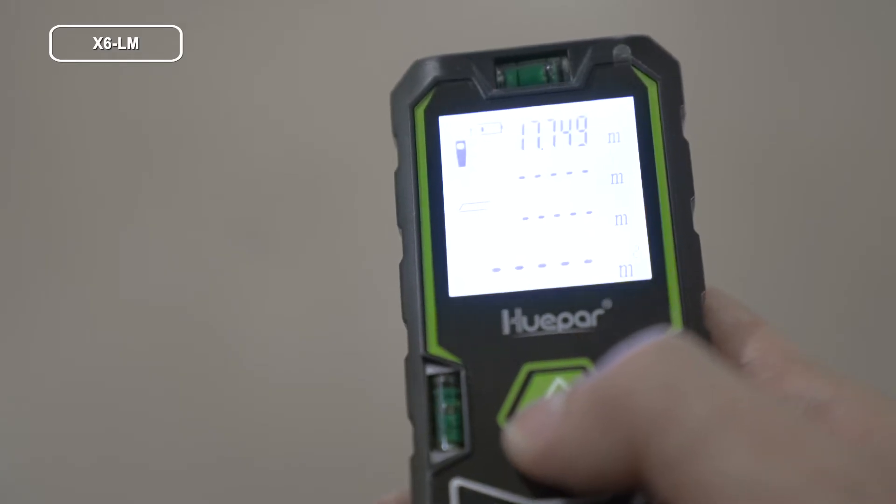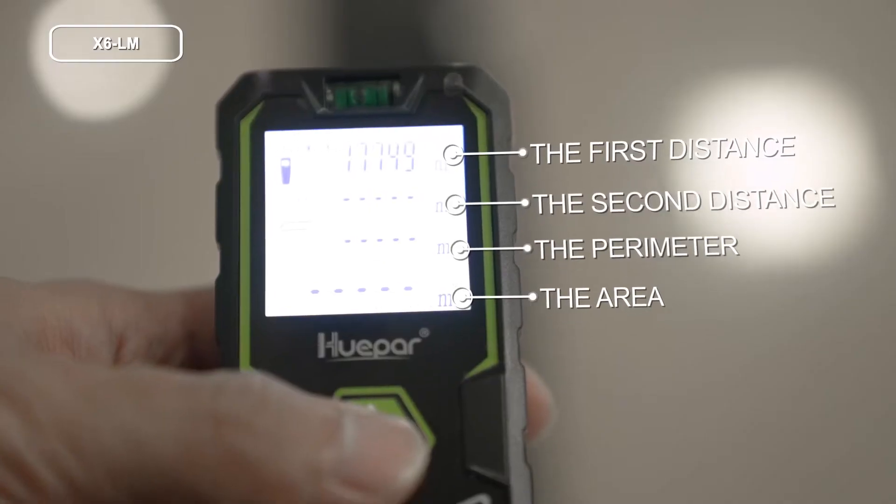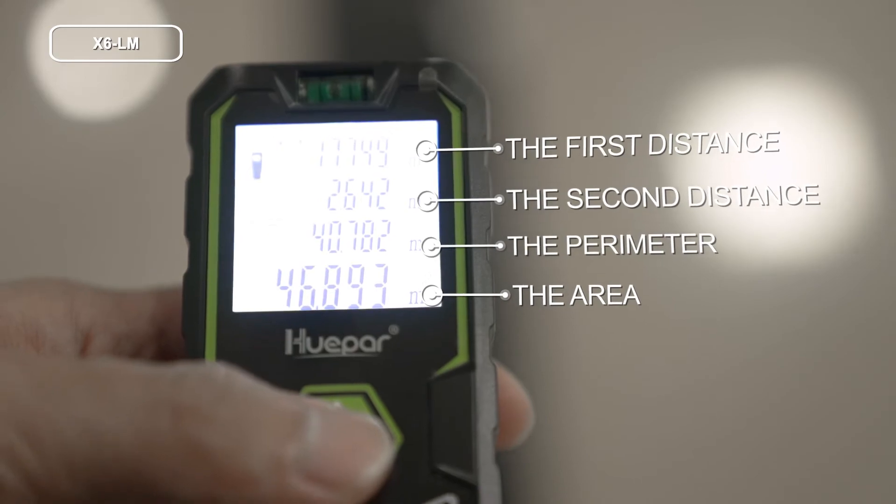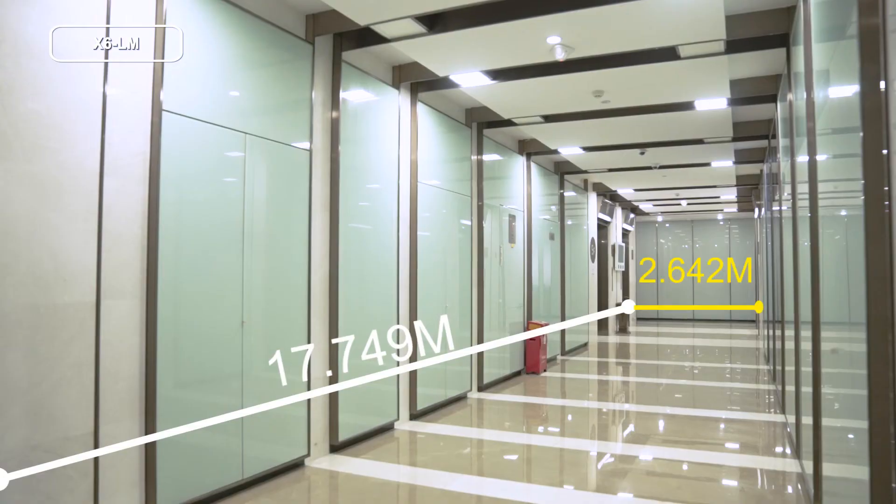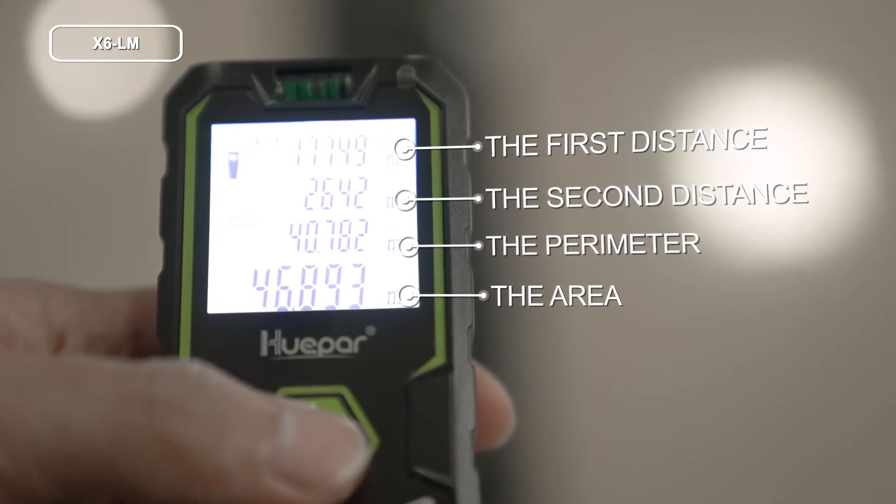Press MES to take the first distance measurement. Press MES again to take the second distance measurement. The results of length, width, perimeter and area are displayed in the screen.